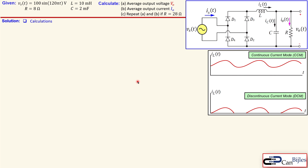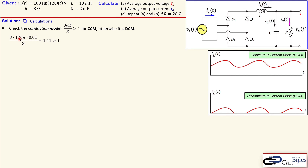First we look at the conduction mode for our circuit. We need to check whether the condition 3·ω·L / R > 1 is satisfied for continuous current mode operation; otherwise it is discontinuous current mode. For our first situation: 3 × 120π × 0.01 / 8 ≈ 1.41, which is larger than one. So we are in continuous current mode (CCM) and the inductor current is continuous.